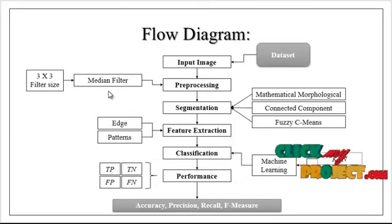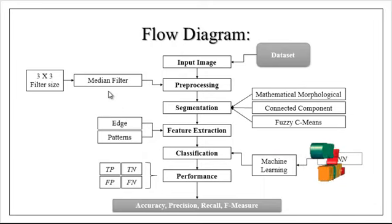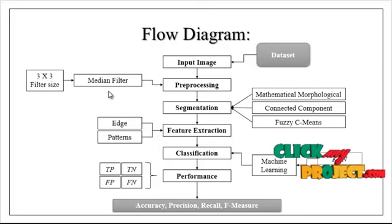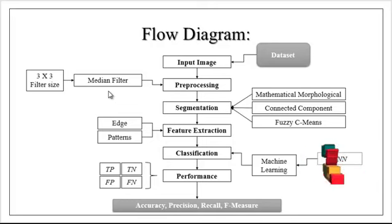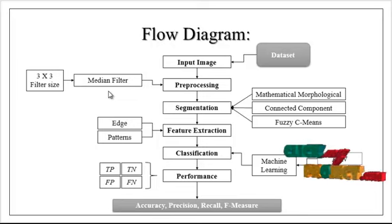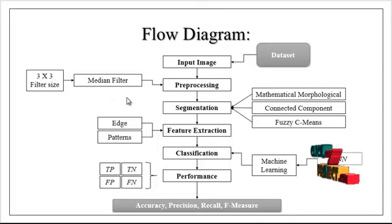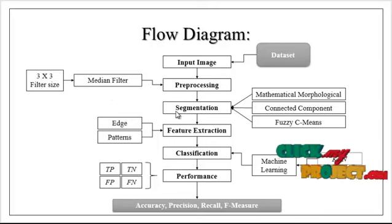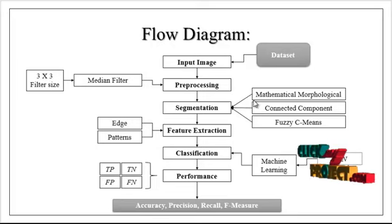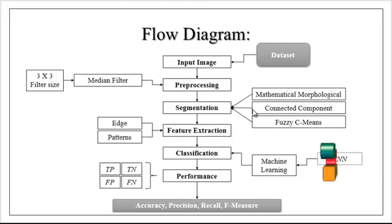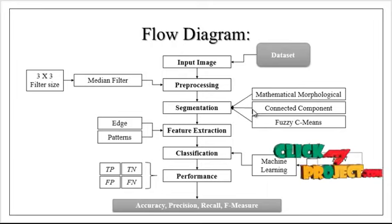After applying the median filter, we resize the image to 256×256, meaning the number of rows will be 256 and the number of columns will be 256. After applying the median filter and image resize, we move to the segmentation portion. In segmentation, the primary component is the mathematical morphological model to segment the tumor region. After that, connected component analysis is applied to remove unwanted regions present in the background.